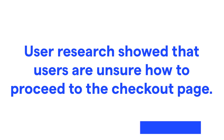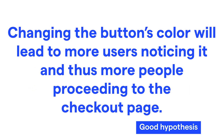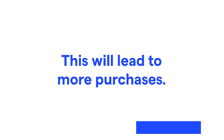To make this a good hypothesis, we can change it to: 'user research showed that users are unsure how to proceed to the checkout page. Changing the button's color will lead more users to notice it and thus more people proceeding to the checkout page, which will lead to more purchases.' This makes it clear that we need to track both button clicks — to show if the color change helps more people notice it — and purchases, to show more people are arriving on the checkout page.